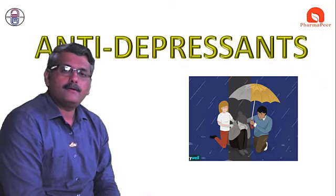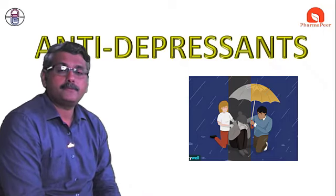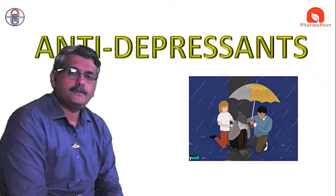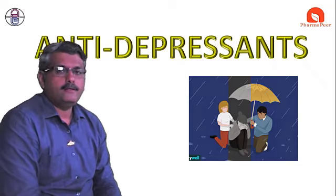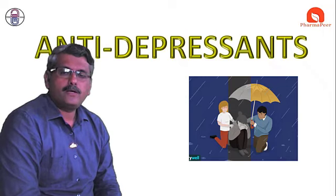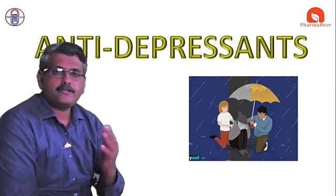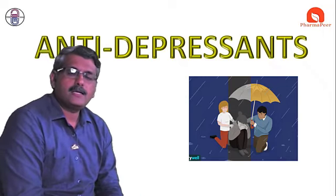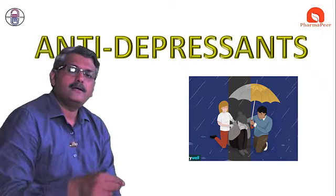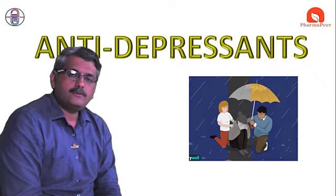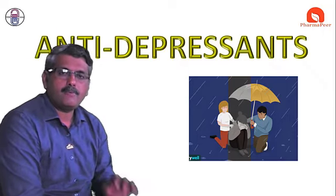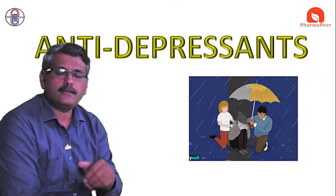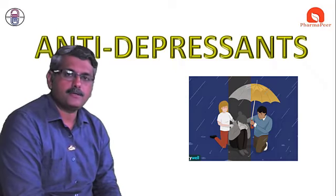Welcome again. Today's topic is the second part of drugs acting on depression, that is antidepressant drugs. In this video we are going to see the mechanism of action of the second class of drug — reuptake inhibition — and how drugs produce their effect by inhibiting the reuptake of certain neurotransmitters.